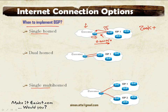When connecting to multiple service providers, BGP should be used to exchange routing updates between the customer and the ISPs, as this leads to optimal routing. However, be very aware of sending any received prefixes from one ISP to another.